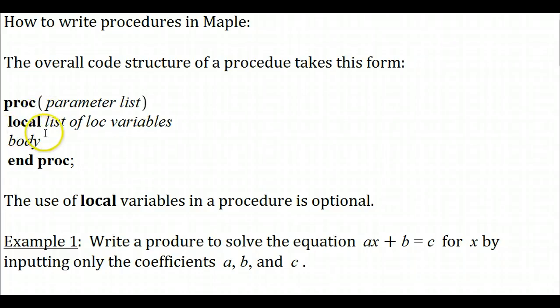use some local variables and list what those are going to be, then you do the action of the procedure. You write the body out what's going to happen in there and then you got to specify when you want the procedure to end. Local variables are optional, you don't need them necessarily in a given procedure.